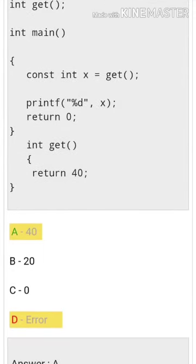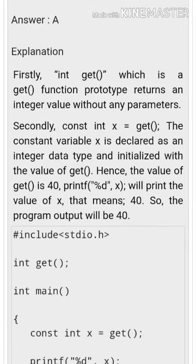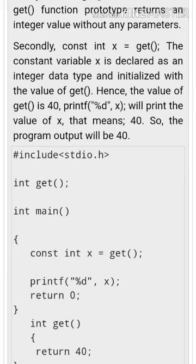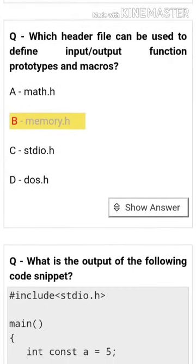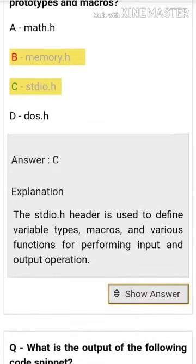In the given code, what will be returned by the function get? It returns an integer value without any parameters. A constant index is required to get the constant variable. X is declared as an integer data type.